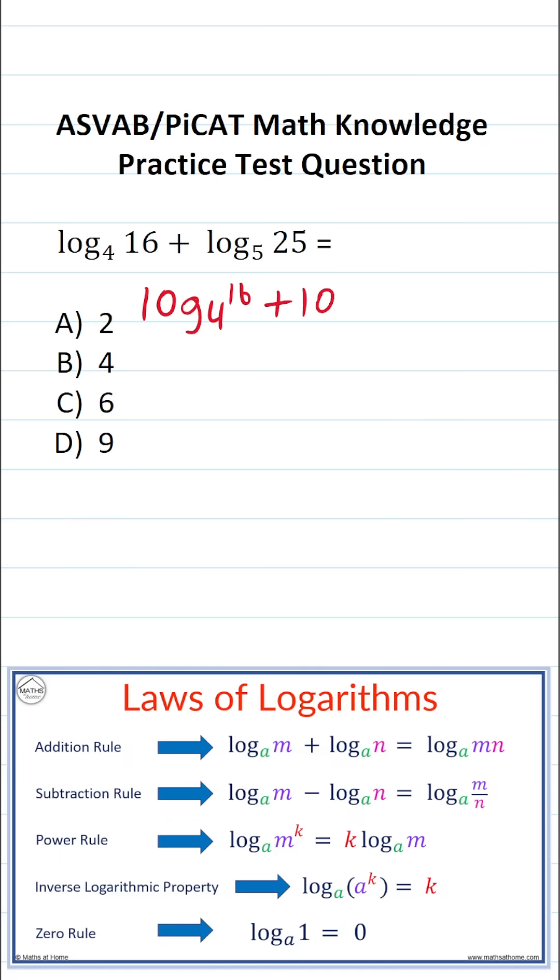On the ASVAB and PyCat, you're not given a reference sheet or a calculator, so I recommend you get in the habit of copying things down and working them out on your own scratch paper.